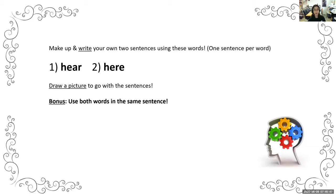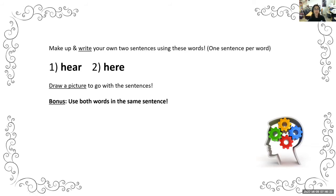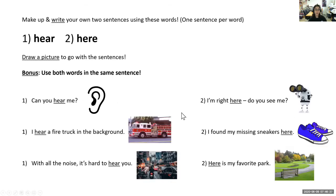Our next words are here and hear. I want you to do the same thing — brainstorm and write your own two sentences using these words, and draw a picture if you like. For a bonus, use both words in the same sentence. Hear is as in 'I can't hear you,' while here is as in 'she is right here' — a certain place. Pause the video and write your sentences.